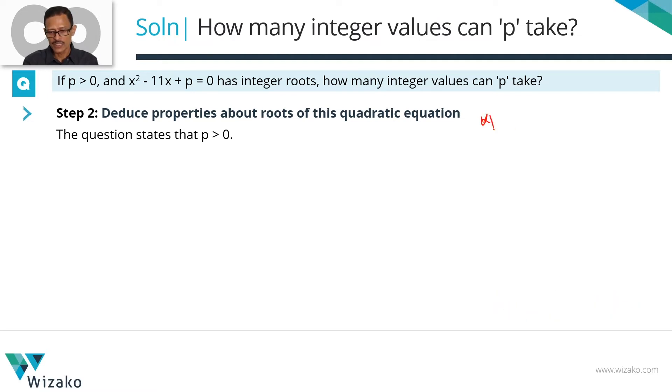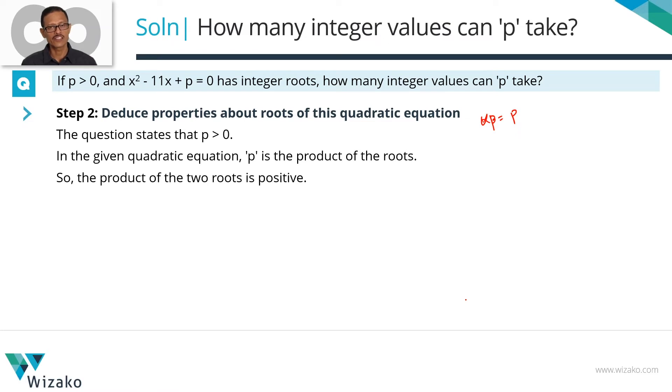In the last slide, we found out that the product of the roots alpha beta equals p. So it essentially means that the product of the roots of this quadratic equation are positive numbers and they are actually positive integers because it says it's got integer roots.